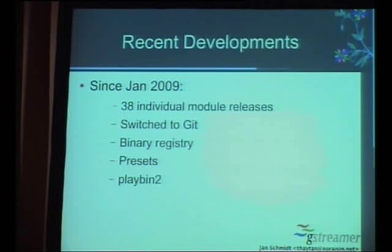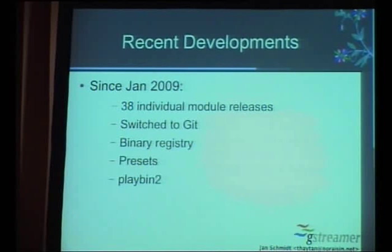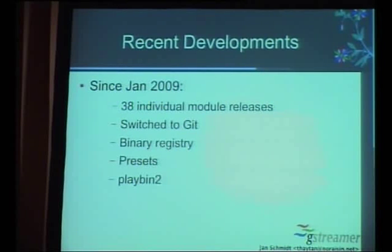In the last year, they've done 38 individual module releases across seven modules: core, base, good, bad, ugly, GL-related plugins, and Python bindings. Releases roll over on a three-month cycle, so in a normal six-month distro cycle there are two releases of all GStreamer modules, with a couple coming out every month. This has been working well for two years.